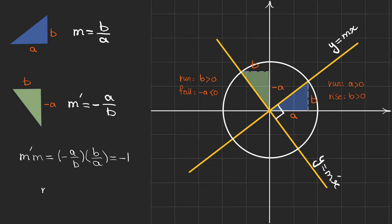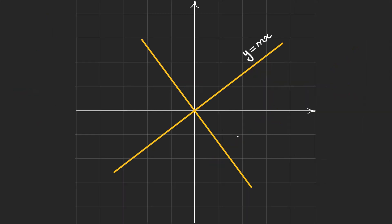And we have the same result as we talked about earlier. So the equation of the line perpendicular to our initial line y equals Mx is y equals minus one over Mx. And this is the perpendicular line.